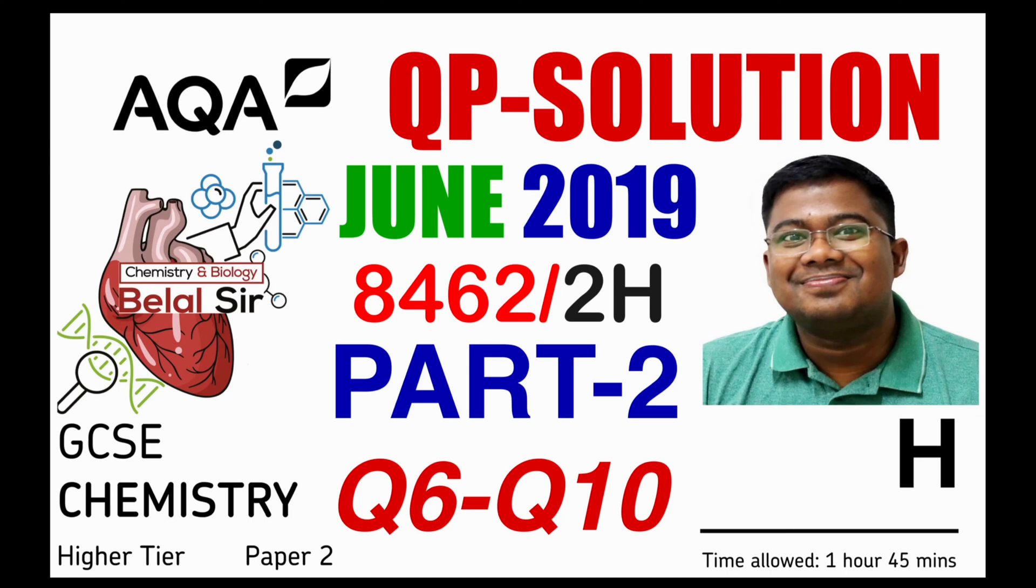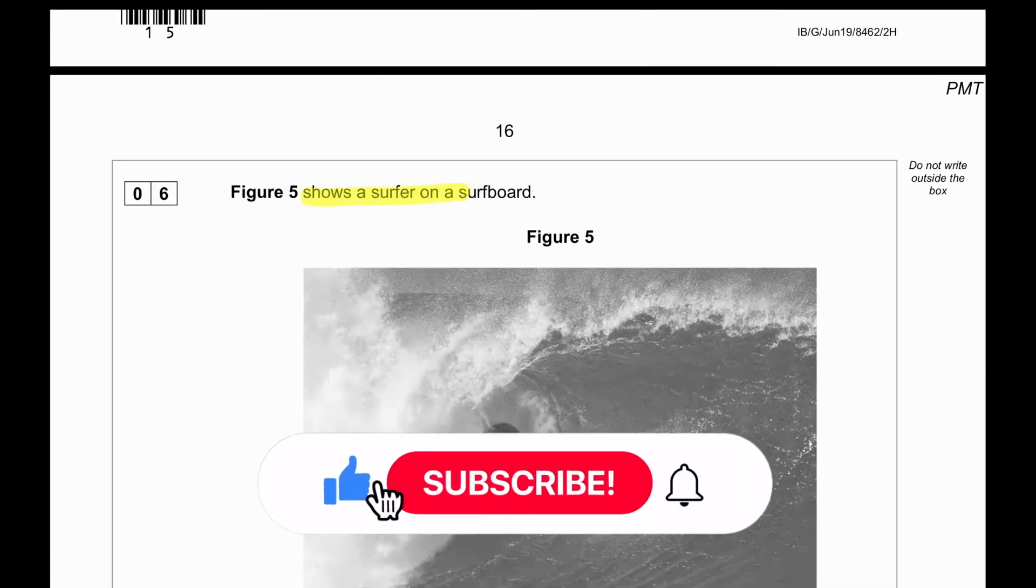Hi everyone, today we're going to be solving AQA GCSE Chemistry Higher Tier Paper. This is June 2019, Part 2 of the question paper, in which we are solving from question number 6 to question number 10. So guys, let's get started.